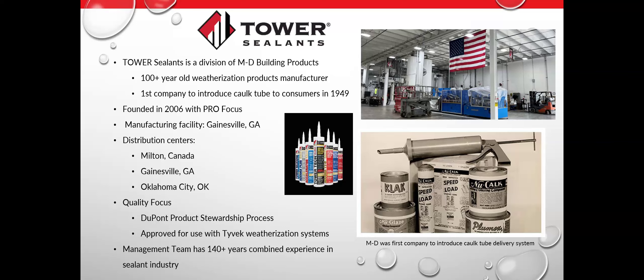Tower was founded in 2006 in Gainesville, Georgia. The founding team recognized a gap between what was available and what professional contractors demanded, so they created a new caulk manufacturing company using brand-new pharmaceutical-grade equipment tied to brand-new formulations made for that equipment. We started with a painters caulks line and now have C920 interior/exterior sealants, construction sealants, and innovative products including the DuPont Tyvek residential sealant. We're still headquartered in Gainesville, Georgia, with distribution centers in Milton, Canada, and Oklahoma City.